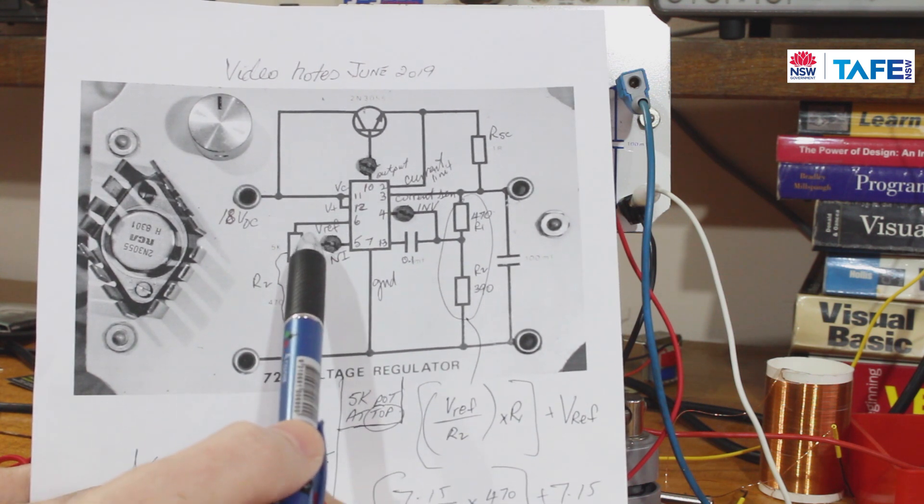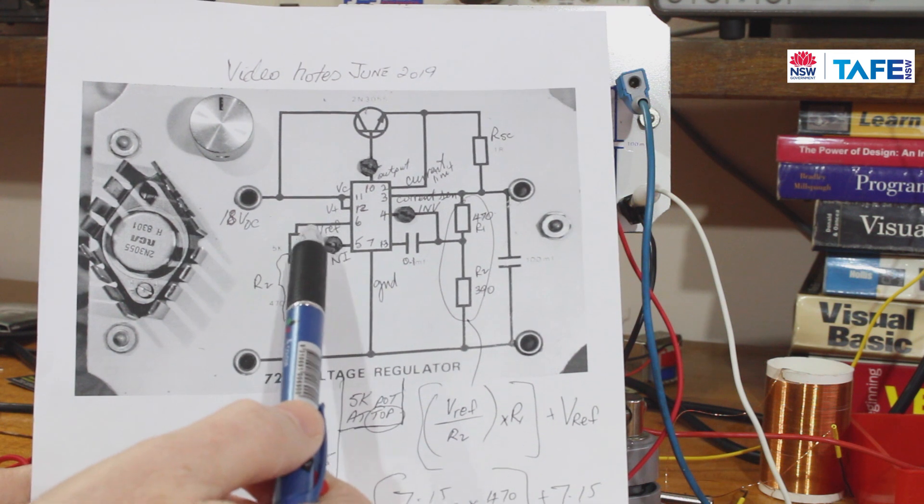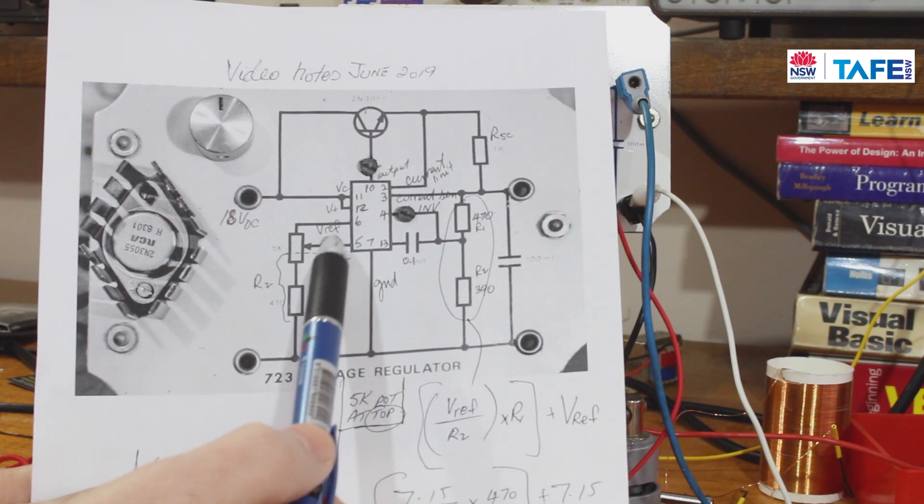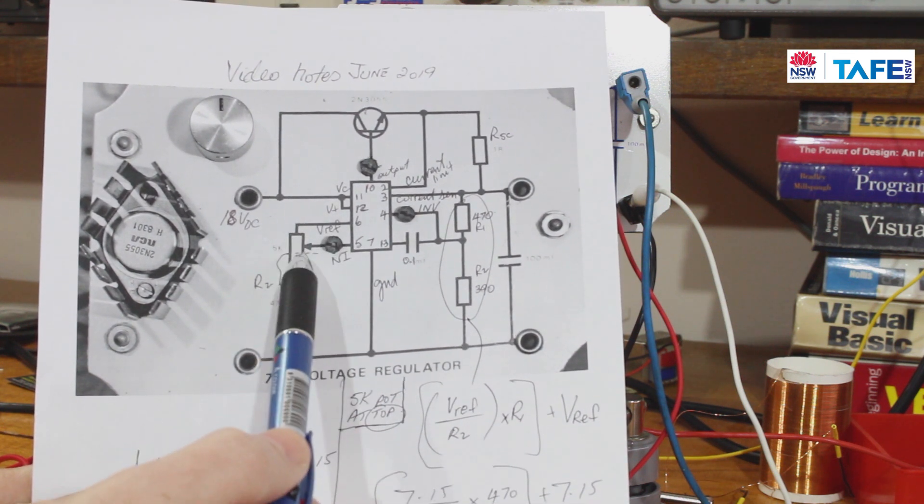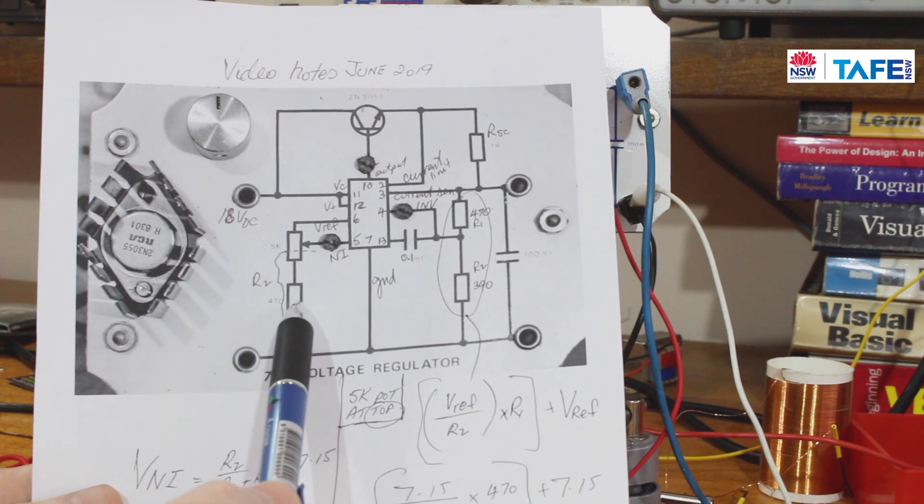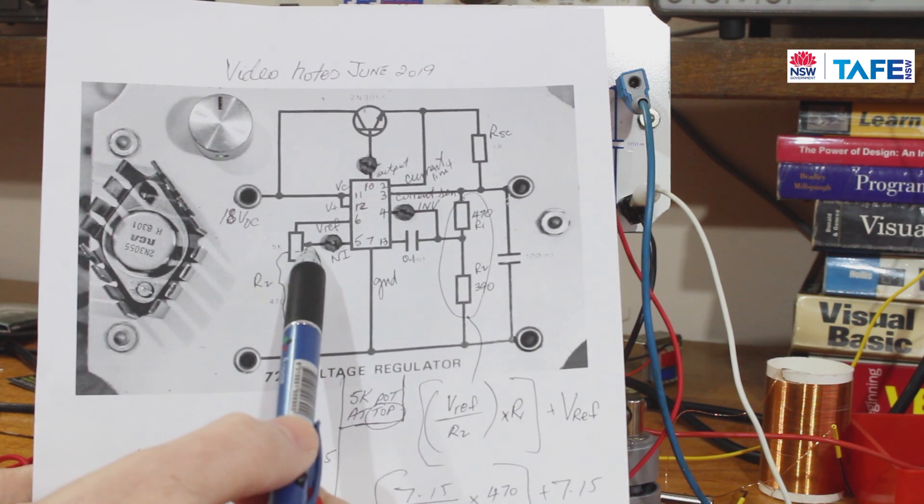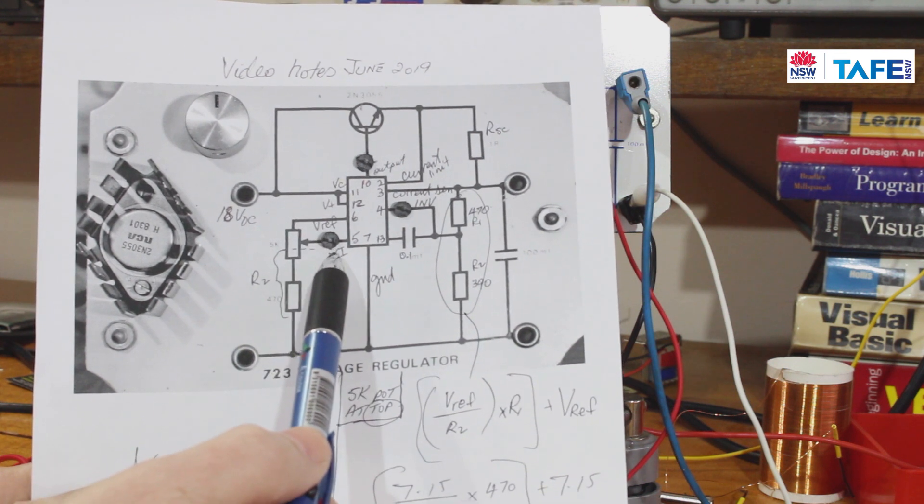It ranges from about 6.9 to about 7.3, so the average is about 7.15. By doing this I can take that voltage down to a much lower level.